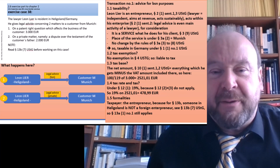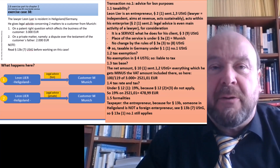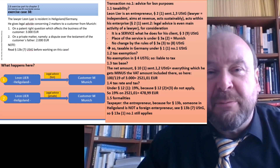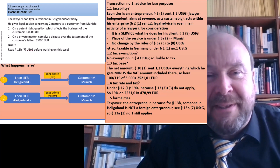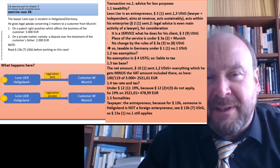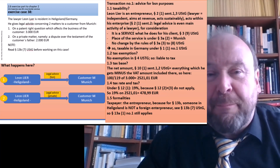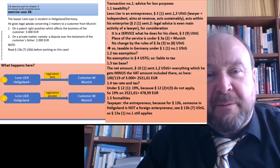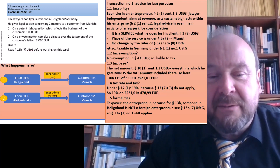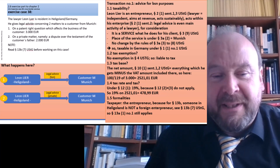Regarding the formalities, the taxpayer is the entrepreneur — that is the lawyer. Under the perspective of §13b, although he is resident in Heligoland, he is not a foreign entrepreneur. For the application of §13b, the idea is whether German law could be enforced against that entrepreneur. Someone living in Heligoland is within the reach of German police and tax authorities, which is why §13b(7) states someone is only a foreign entrepreneur if he does not have his enterprise on German territory — including Heligoland.